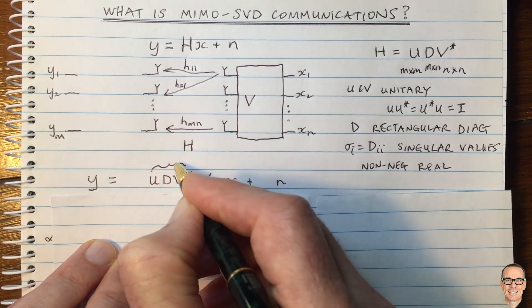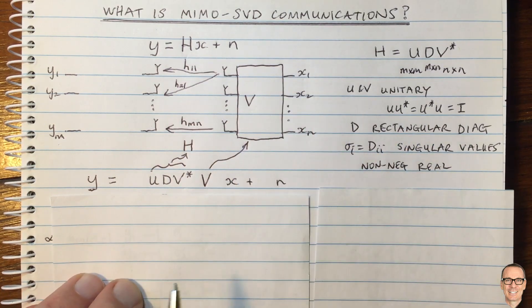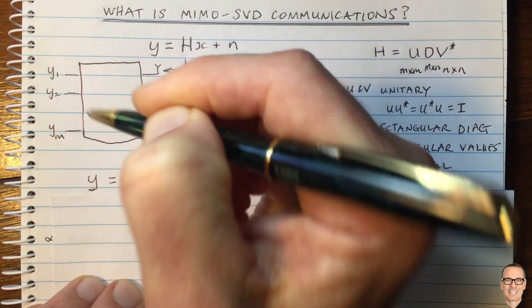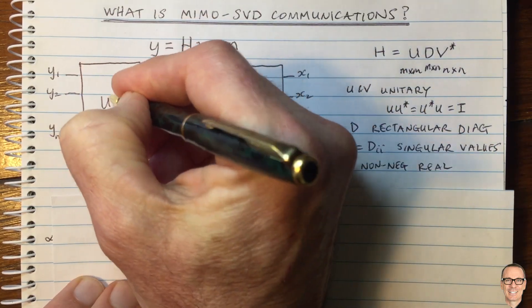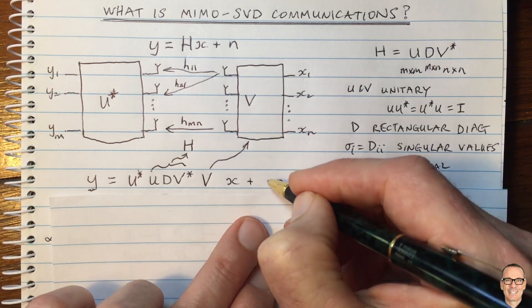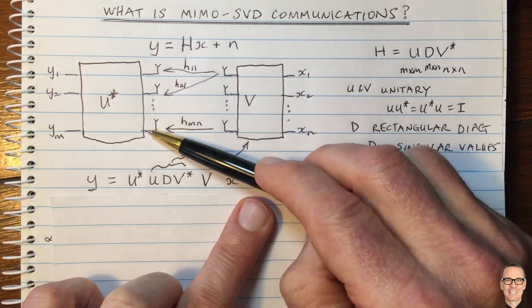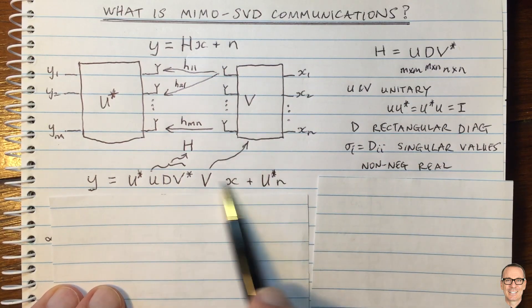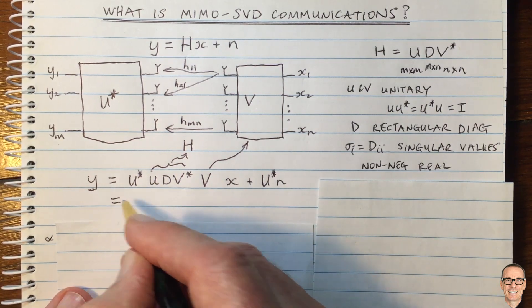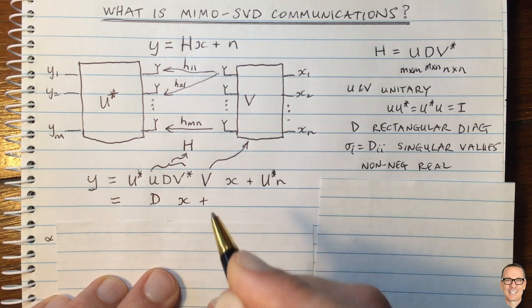This pre-coding operation happens before we transmit our symbols. At the receiver, we do a similar operation — multiplying by U-star before producing our final symbols for estimating the inputs. Of course, that means we're also multiplying the noise by U-star, since the noise comes from the amplifiers in the receive antenna elements. Using the unitary property, the equation simplifies to Y equals D times X plus U-star times N.